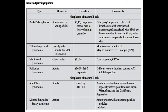Diffuse large B-cell lymphoma is the most common adult non-Hodgkin's lymphoma. As the name implies, it spreads very quickly — it's an aggressive tumor, but that aggressiveness actually makes it more responsive to chemotherapy. Mantle cell lymphoma, by contrast, has a very poor prognosis and is non-responsive to chemotherapy. Its translocation is between chromosomes 11 and 14, and on flow cytometry these tumors are CD5 positive — distinct from Hodgkin's lymphoma which is CD15 and CD30 positive.